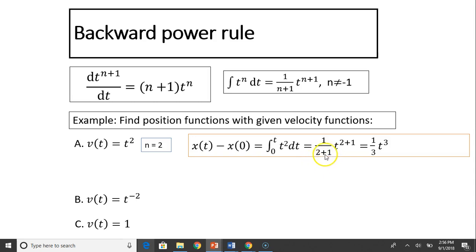We plug this in, n equals 2, 2 plus 1 on the bottom. Here's t^(2+1). So that equals 1/3 t^3. So x(t) is just 1/3 t^3 plus x(0). So this is a general function of position as a function of time.